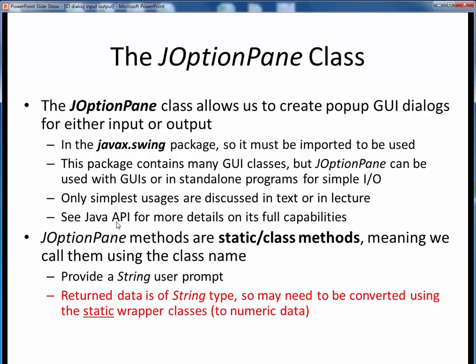The key things to realize about JOptionPane are that it contains static methods, which means we use them using the name of the class itself and not any instantiated object. We need to provide its methods with some string prompt or message to be displayed, and any return data is of the string data type, which means that if we want to convert it into some numeric data type for calculations, we have to use the appropriate wrapper class.